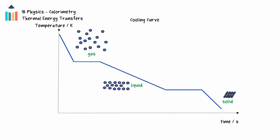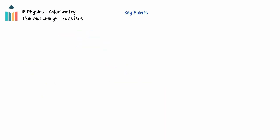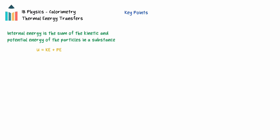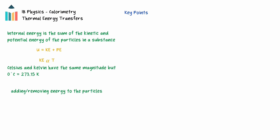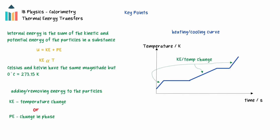If the energy is removed from the substance, then the graph is known as a cooling curve. In summary, the internal energy of a substance is the sum of the kinetic and potential energies of the particles in a substance. The kinetic energy is directly proportional to the Kelvin temperature. Temperature can also be measured in degrees Celsius; the scale of these units is the same, but 0 degrees Celsius is equal to 273.15 Kelvin. Adding or removing energy to the particles of a substance will cause either the kinetic energy of the particles to change, changing the temperature, or the potential energy of the particles to change, changing the phase. These changes can be shown on a heating or cooling curve — a temperature-time graph with sloping sections related to kinetic energy change where temperature is changing, and horizontal sections relating to potential energy change where the phase is changing.